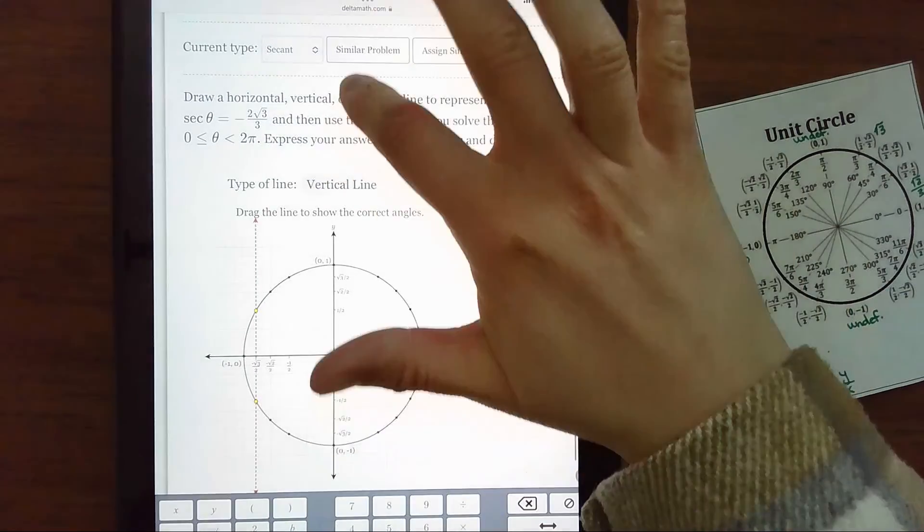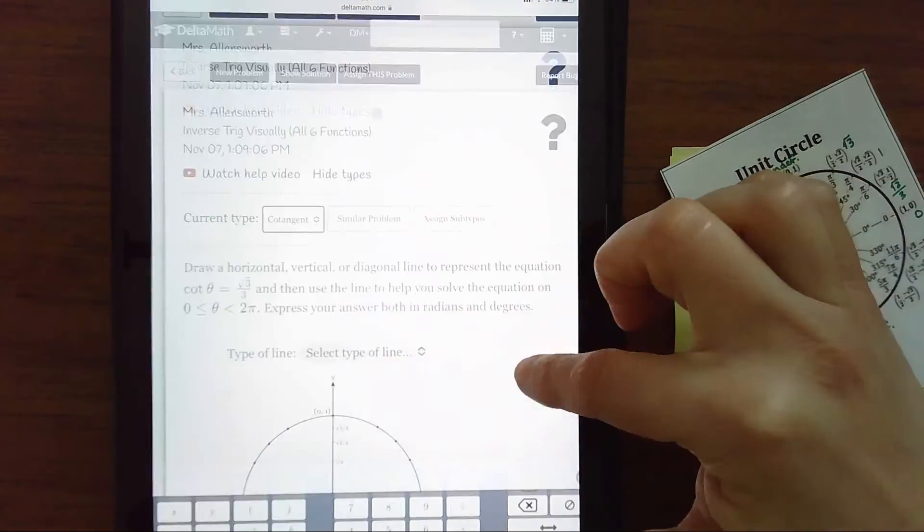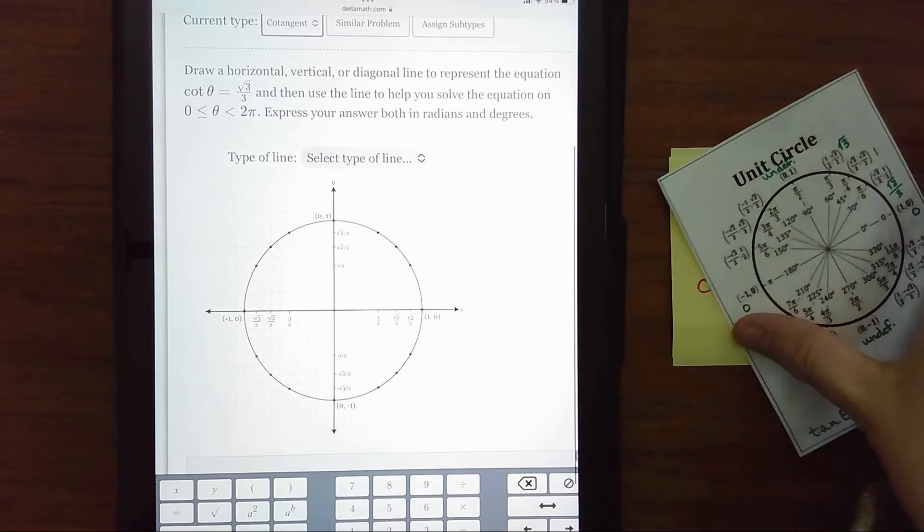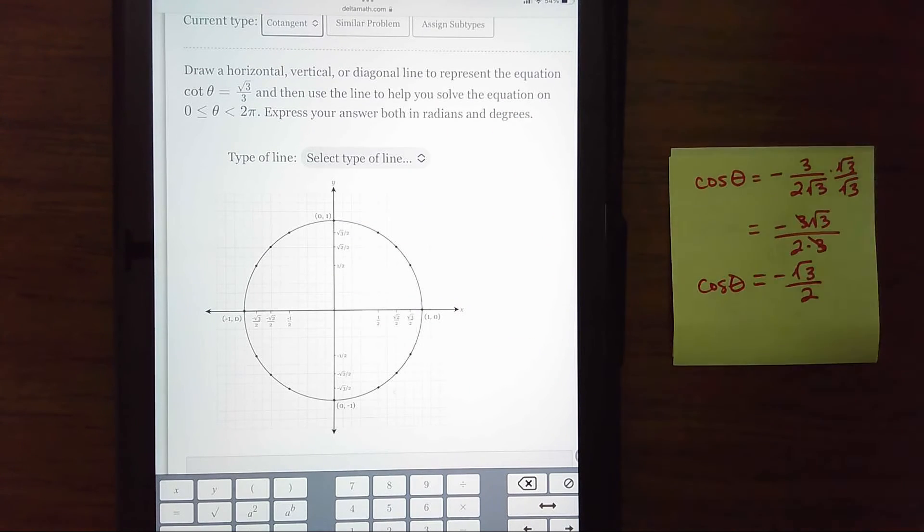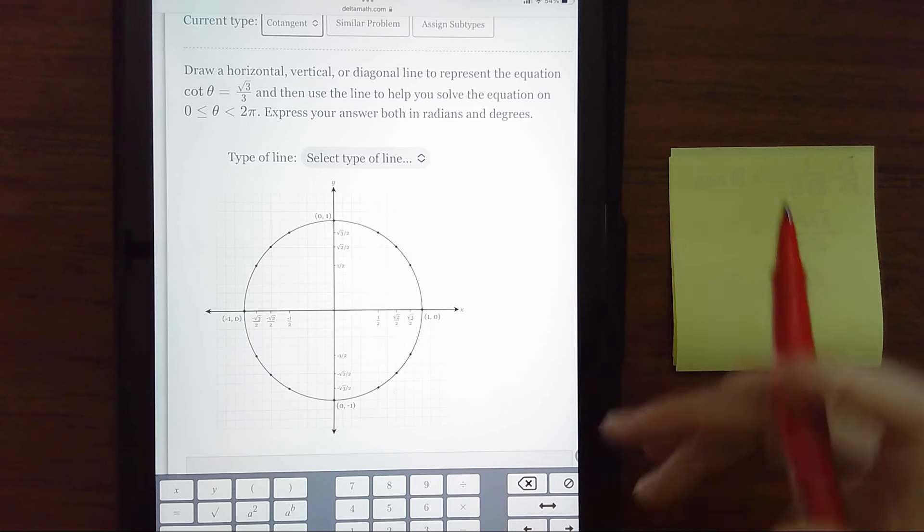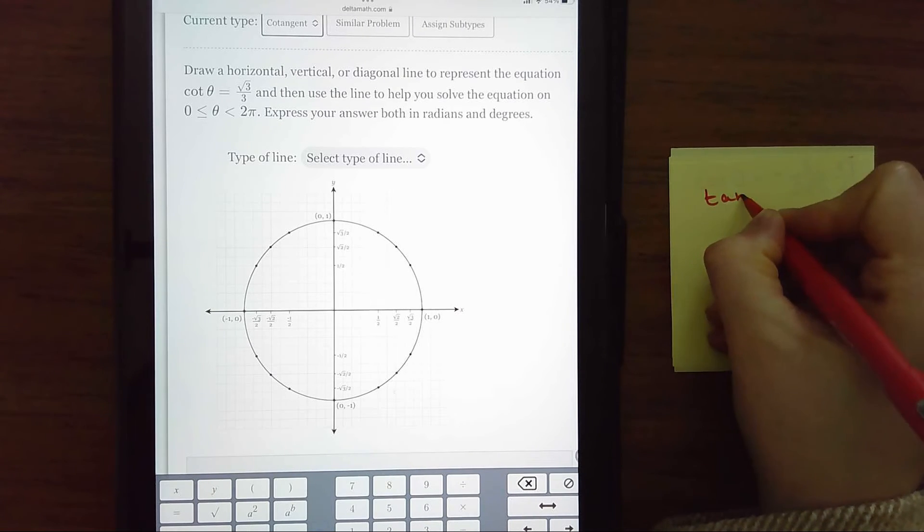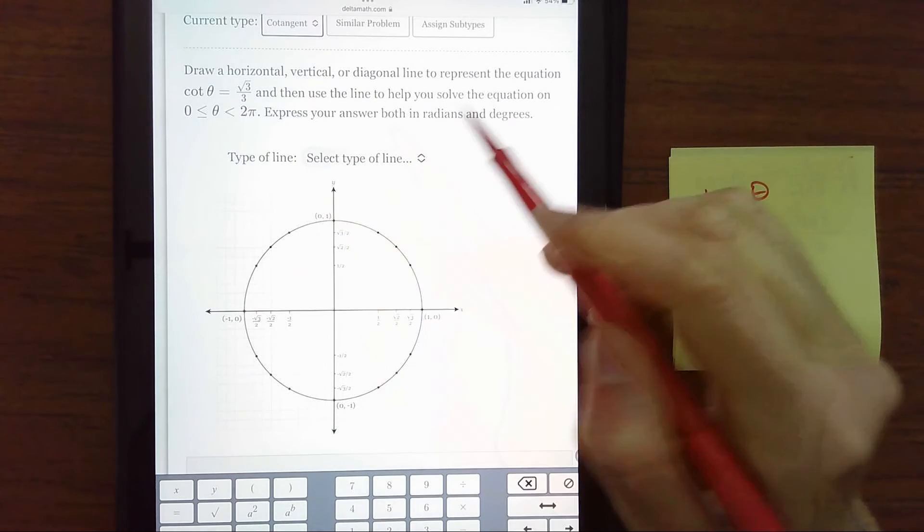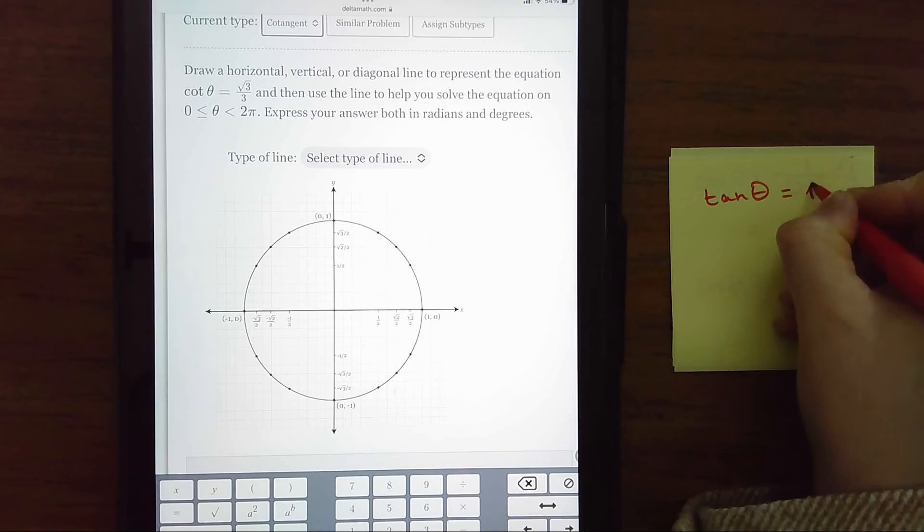And then the last one I want to look at is cotangent. All right. Right now we have cotangent of an angle needs to equal square root of three over three. You should get to where you know that anytime I want to reciprocate square root of three over three, it's simply square root of three.